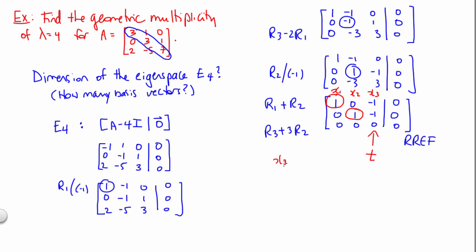And we've said that x3 is equal to t. The top row tells us that x1 minus x3 is equal to 0, meaning x1 is equal to x3, and that tells us that x1 is also equal to t. Middle row tells us that x2 minus x3 is equal to 0, meaning x2 is equal to x3. And we said before that x3 is t, so that tells us x2 is also equal to t.